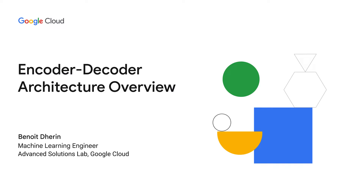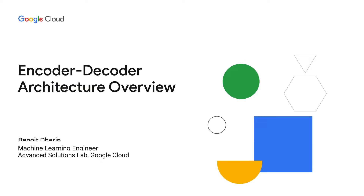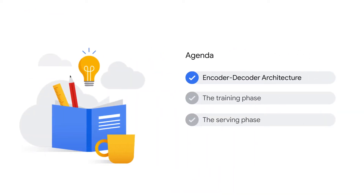Today I'm going to talk about the encoder-decoder architecture which is at the core of large language models. We will start with a brief overview of the architecture, then I'll go over how we train these models, and at last we will see how to produce text from a trained model at serving time.